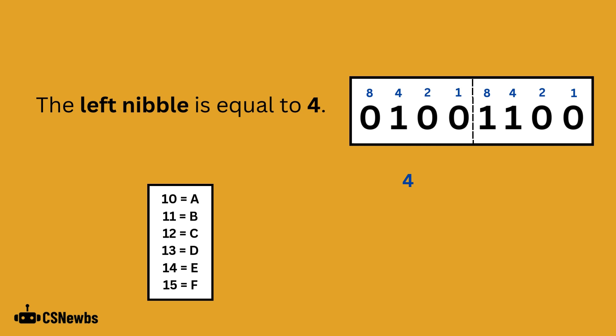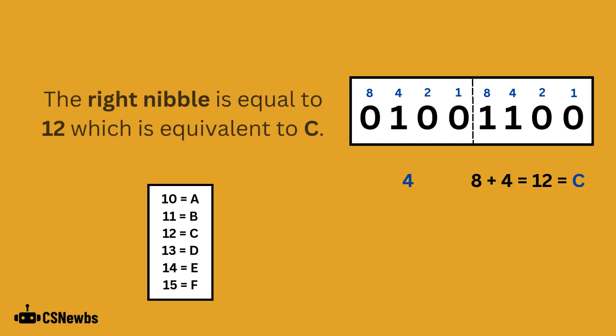Add together the place values that have a 1 beneath them. For the left nibble, it is just 4. The right nibble is equal to 12, 8 plus 4. 12 in hexadecimal is equivalent to the letter C.